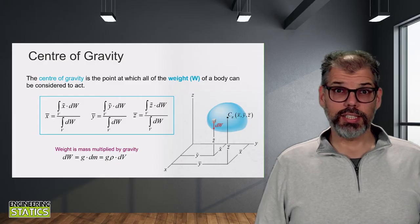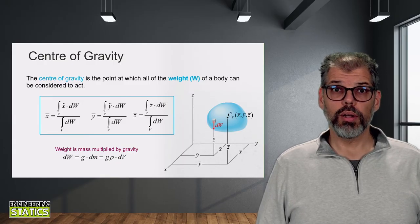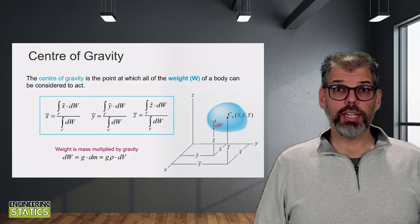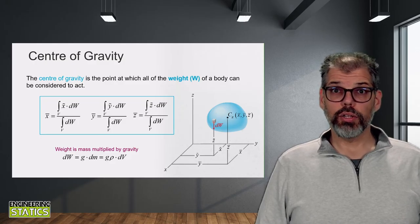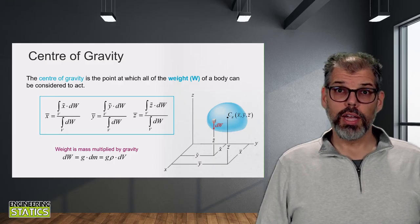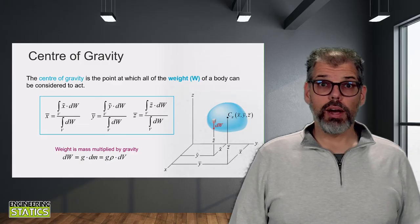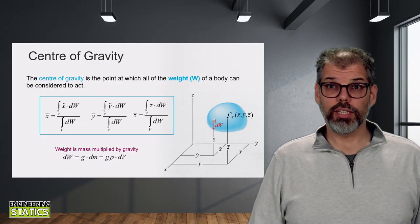But isn't acceleration due to gravity just 9.81 meters per second squared? Well, if you were only studying mechanical or civil engineering, you could get away with this. But you decided to be an aerospace engineer, and in astronomical sense, we have to worry about varying gravitational acceleration fields.